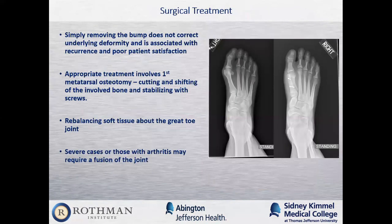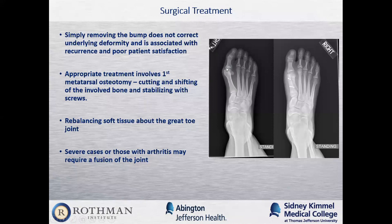Surgical treatment is sometimes more complex than people realize because simply shaving the bump doesn't correct the underlying deformity. The appropriate treatment usually involves cutting the first metatarsal and shifting it over, shaving the bump down, and performing a realignment of the soft tissues of the great toe joint. In very severe cases or cases with associated arthritis, a fusion of the big toe joint is the most effective treatment.